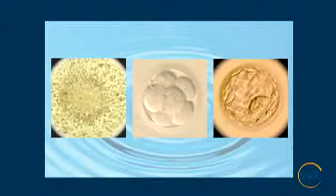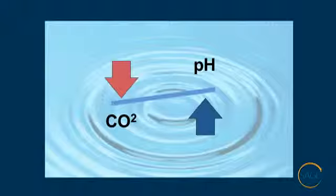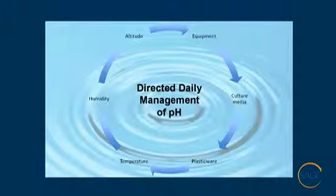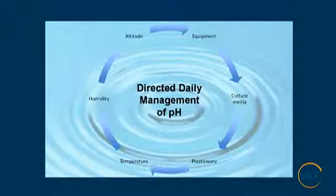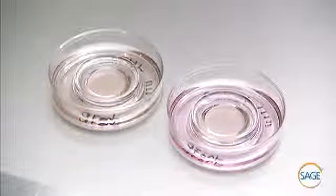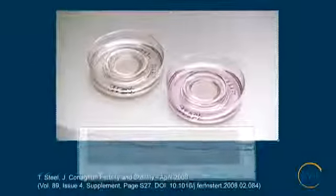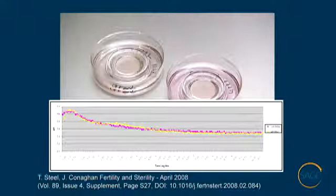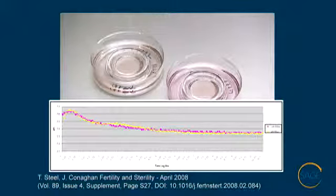Oocytes, cleavage stage embryos, and blastocyst embryos require different pH environments during culture. pH should only be adjusted by titrating CO2 levels in your incubator. Directed daily management of pH values is essential since every laboratory's environment is different due to many parameters — for example, equipment, culture media, plasticware, temperature, humidity, and altitude. Rapid de-equilibration of both temperature and pH occurs after the removal of culture dishes from the incubator, usually in less than 10 minutes. Cultured dishes re-equilibrate slowly due to the relative magnitudes of differential CO2 contents between the equilibrated medium, the air, and between the incubator's atmosphere and the partially outgassed medium.